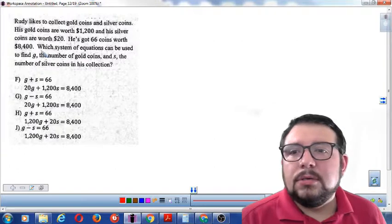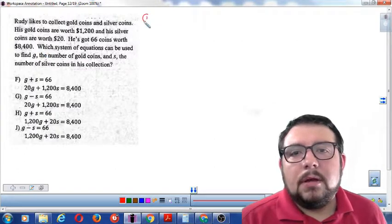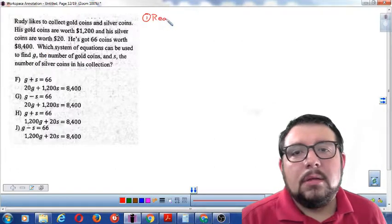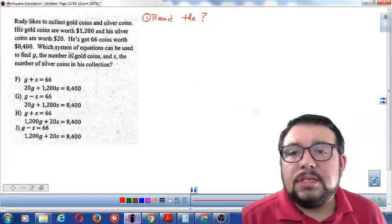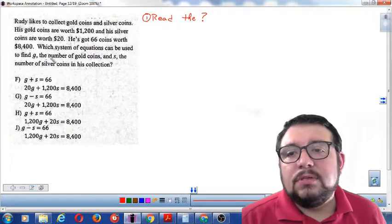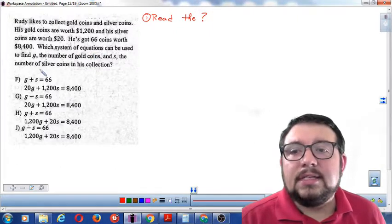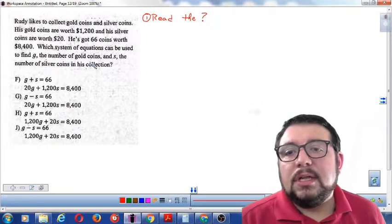So let's go through the process here. Step one, I'm going to read the question. So step one, read the question. Which system of equations can be used to find G, the number of gold coins, and S, the number of silver coins in his collection?